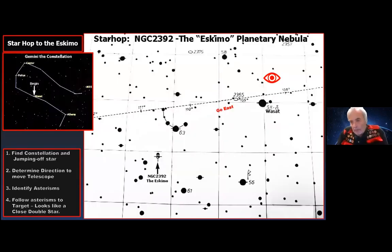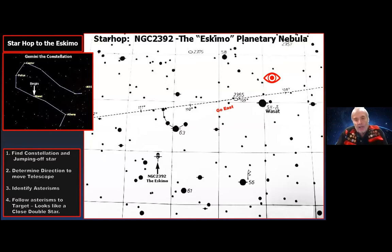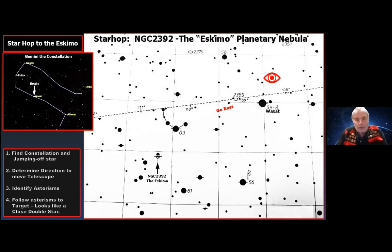I talk about and promote star hopping a lot. Computers and go-to systems are fine and acceptable for the program, but if you learn how to find things without a computer in the sky, you can find it with anybody's telescope on any night. If you do it three or four times, you can memorize it — then you don't need a computer. I can find most of these objects in about five seconds. When you can do that, it gets to be really fun.